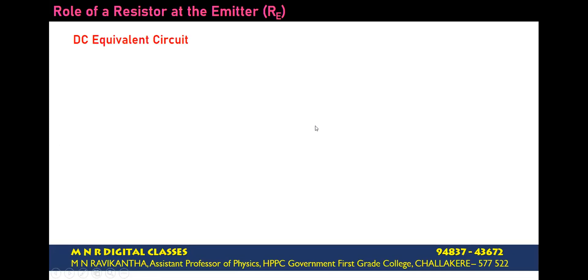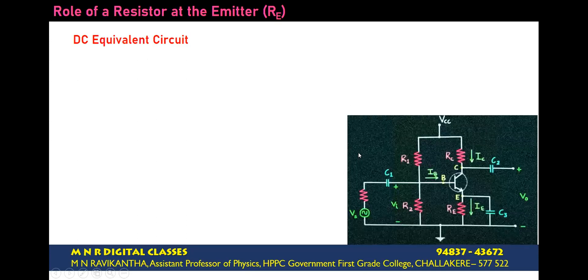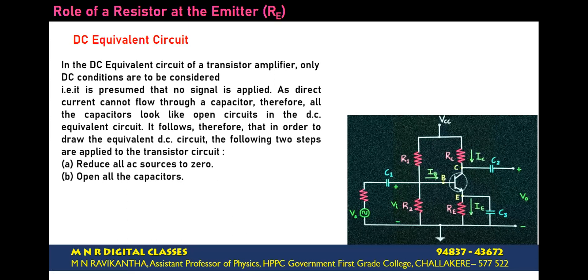Now, let us understand the role of emitter resistance in the CE amplifier circuit. To understand this, first let us draw the DC equivalent circuit of the CE amplifier. In order to draw the DC equivalent circuit, we consider only the DC components present in the circuit. All AC components should be eliminated. The procedure is: first, reduce all AC sources to zero. Second, open up all the capacitors, because a capacitor provides infinite reactance to the flow of DC and hence plays no role in DC analysis.